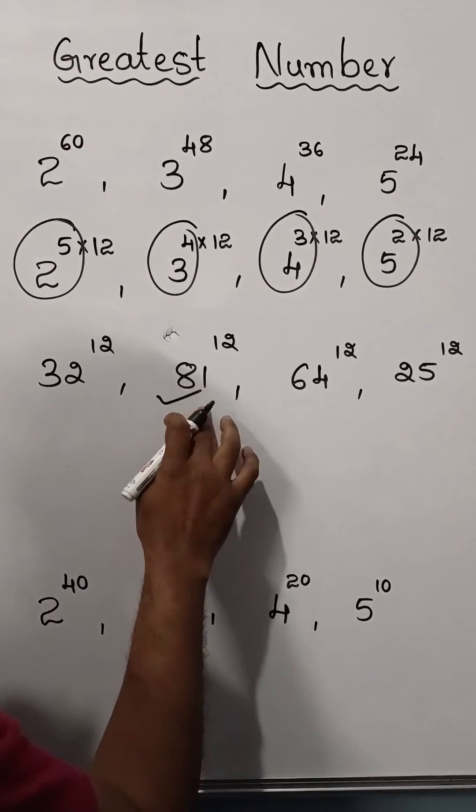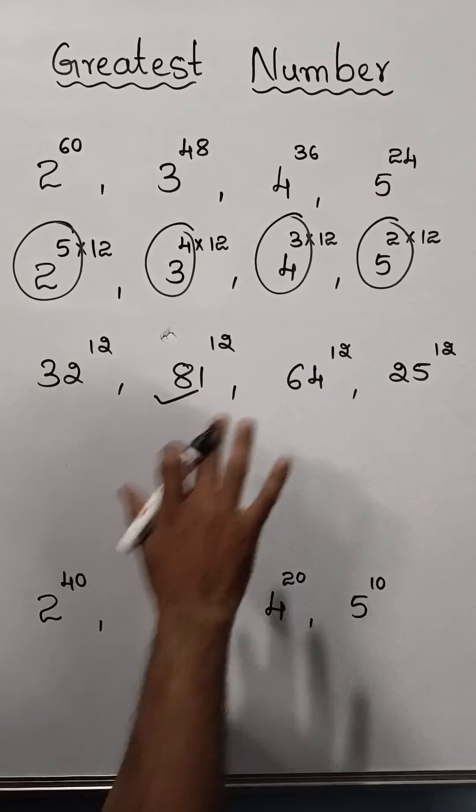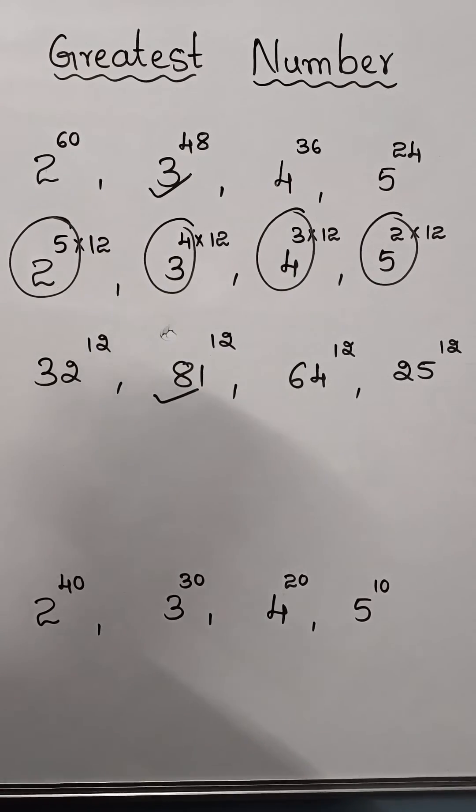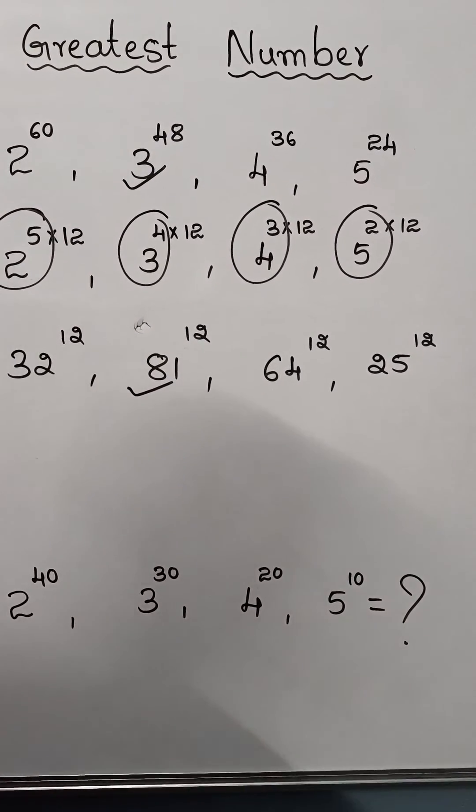Therefore, 81 to the power 12 is the greater number among all these exponents. So, 3 power 48 is the greatest number. Now, comment on this.